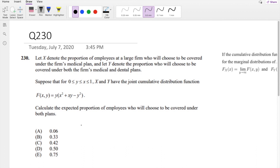Okay, alright then, let's just dive right in. So basically they give you a CDF function of a joint distribution right here. And we're trying to find the expected portion of employees who will choose to be covered under both plans.